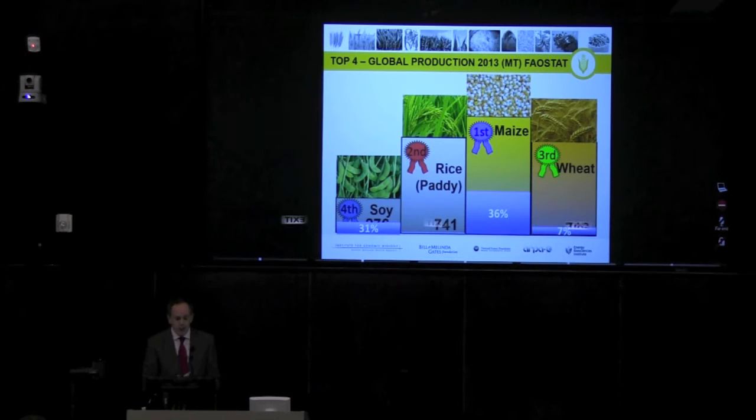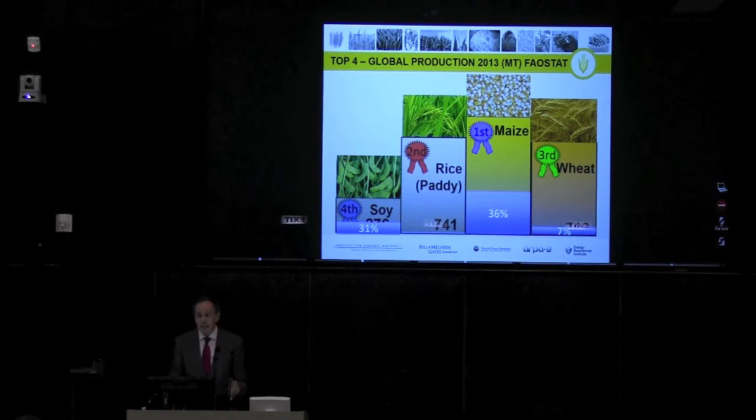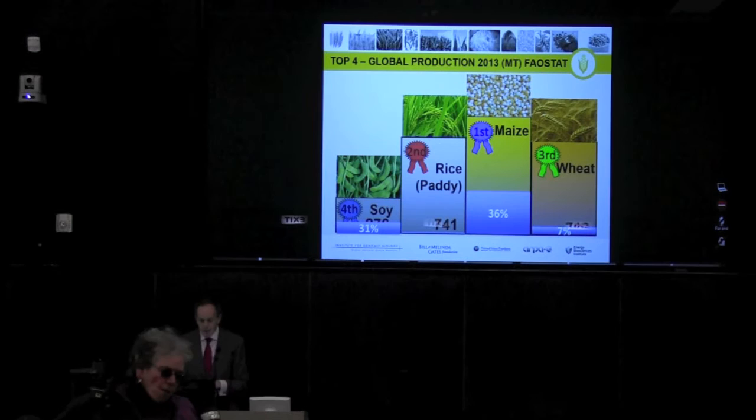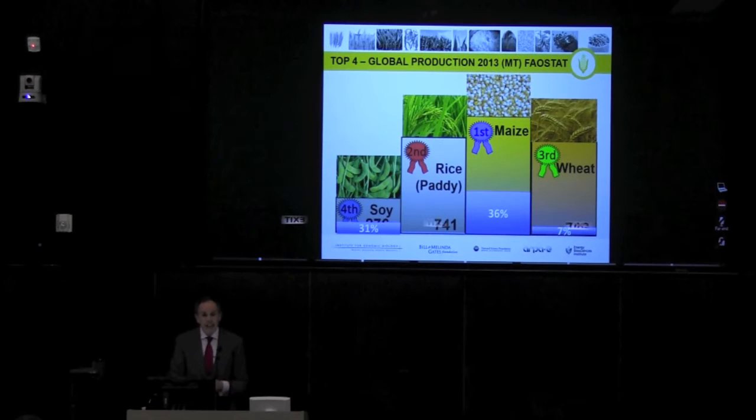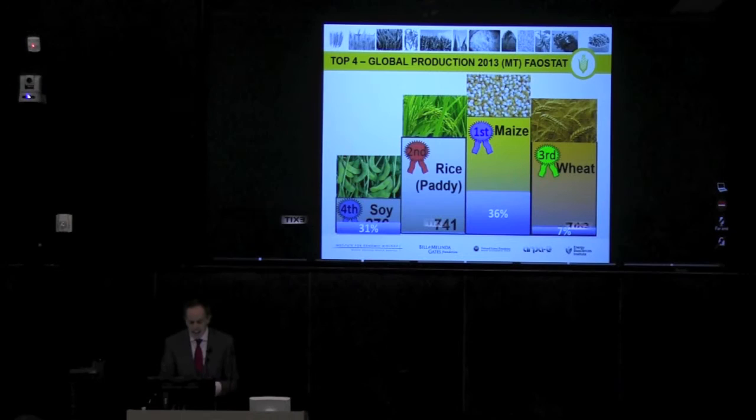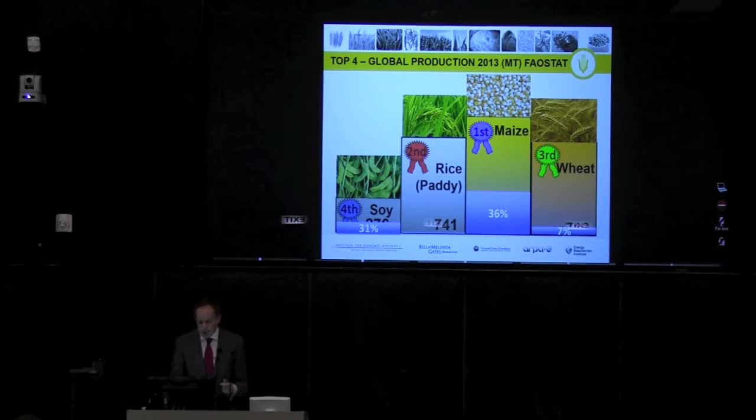The United States plays a big part in the production of these crops. Although we only have a tenth of the world area devoted to maize, in fact, we produce over one-third of the world's maize. We produce about a third of the world's soy, and a significant part of the world's wheat as well. And the United States remains the biggest exporter of these primary foodstuffs. So what happens in the United States is actually very important for costs of many of these foods globally.